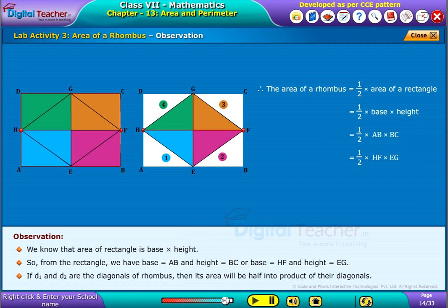If D1 and D2 are the diagonals of rhombus, then its area will be half into product of their diagonals.